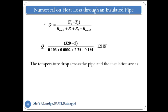For the second part, we calculate the temperature drop across the pipe and across the insulation. The temperature drop across the pipe (from inner surface to outer surface) is: ΔT_pipe = Q × R_conduction1 = 121 × 0.002 = 0.242°C — a negligible temperature difference, because the cast iron pipe has very high thermal conductivity.